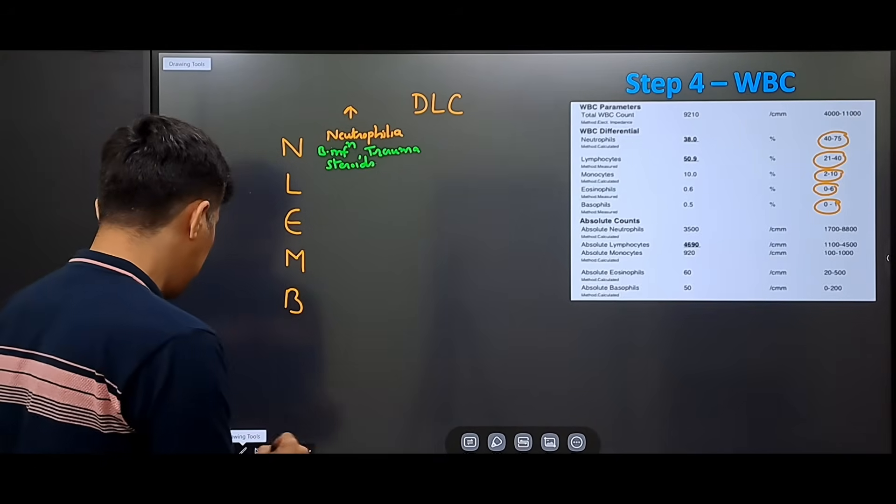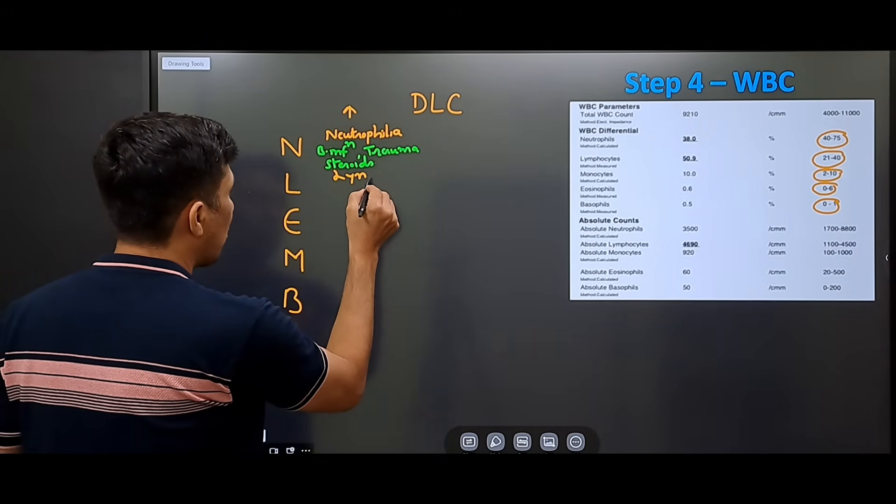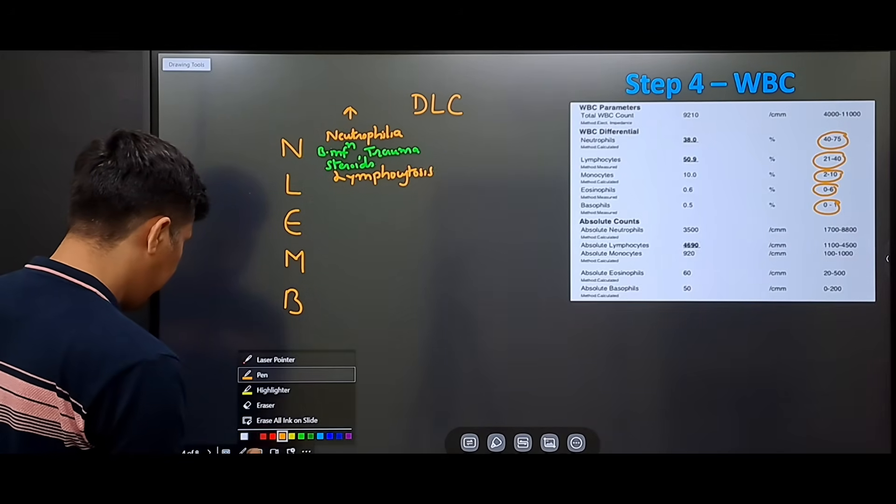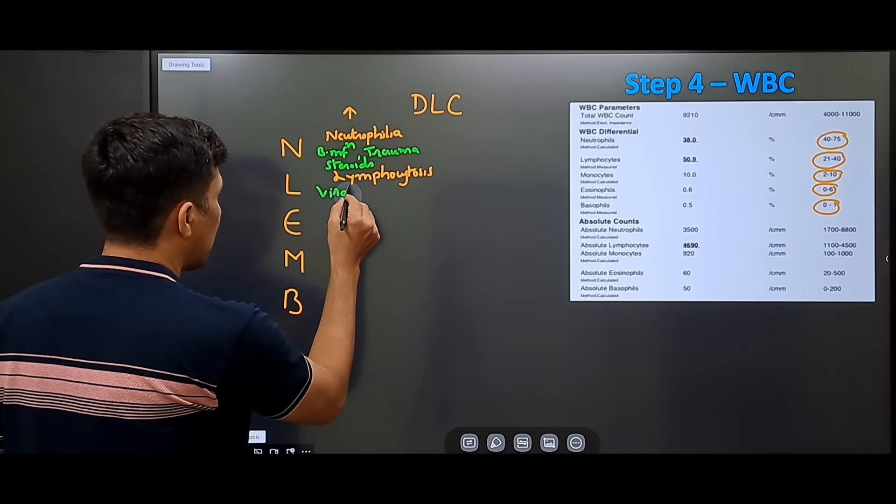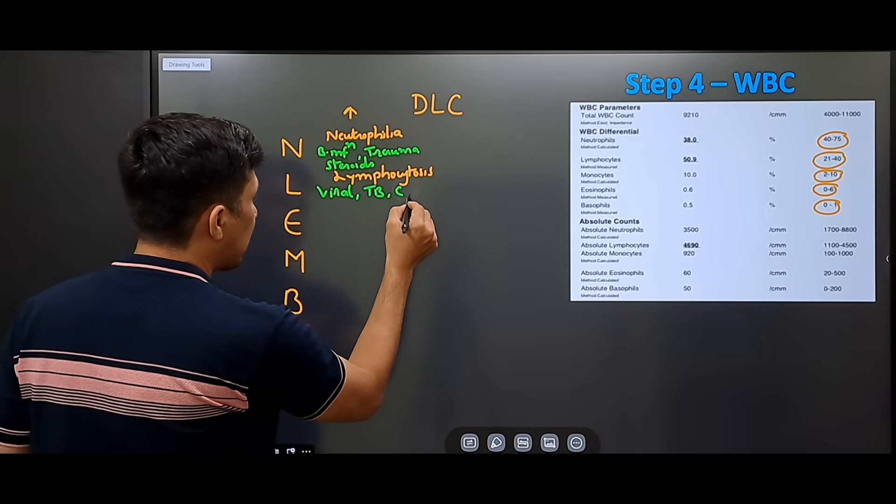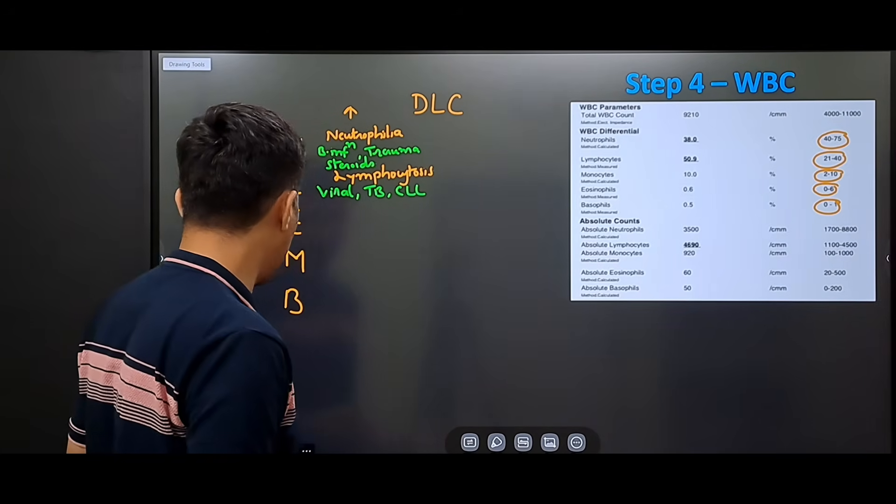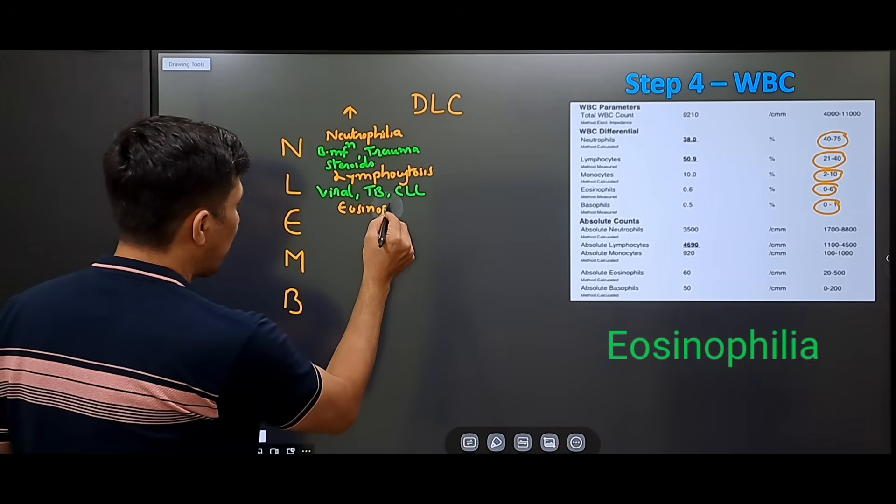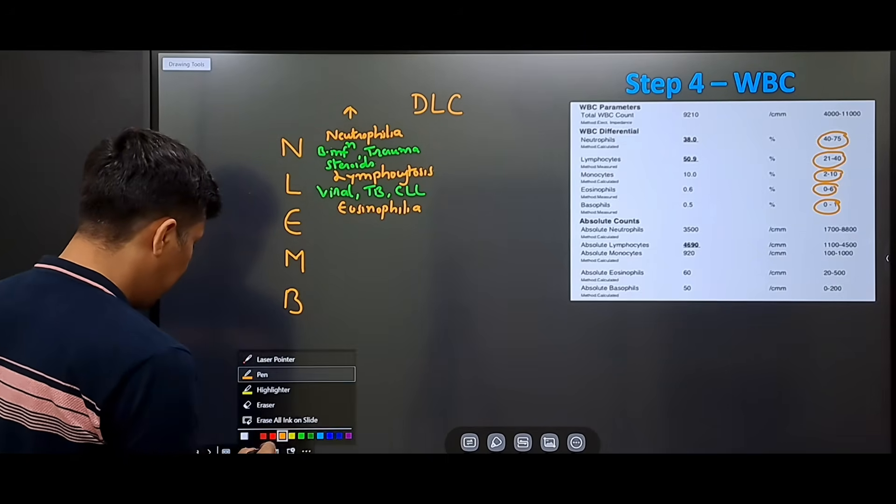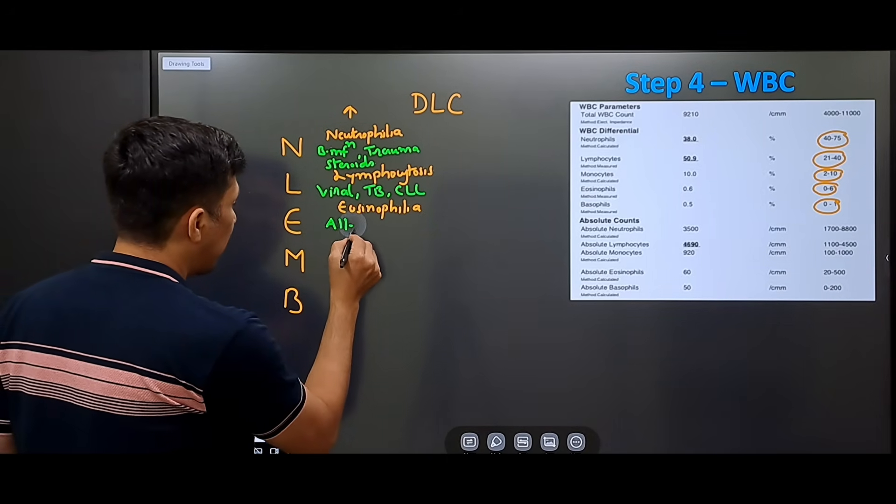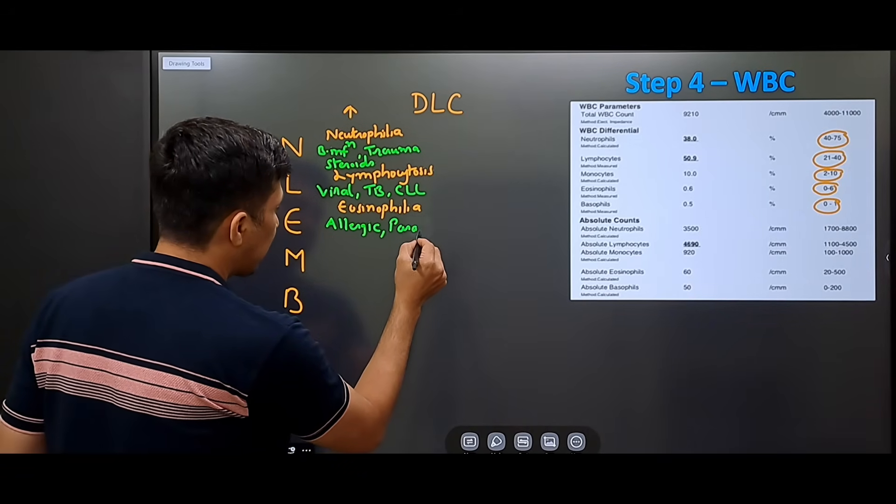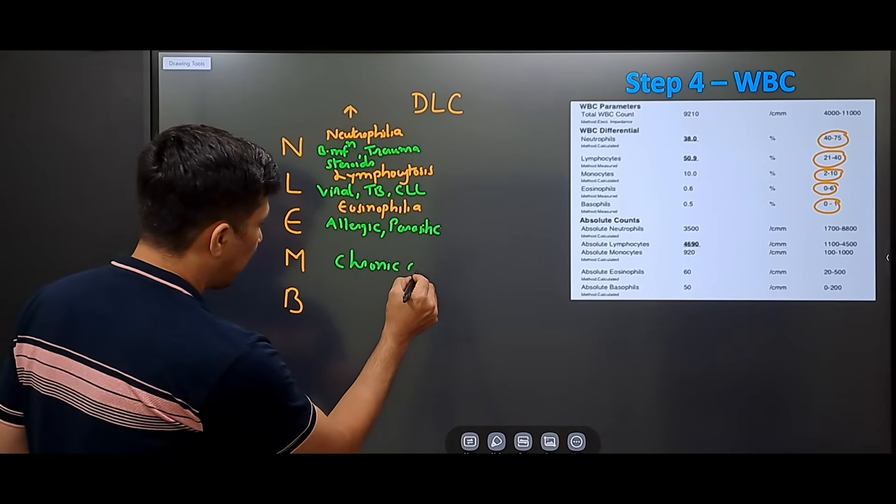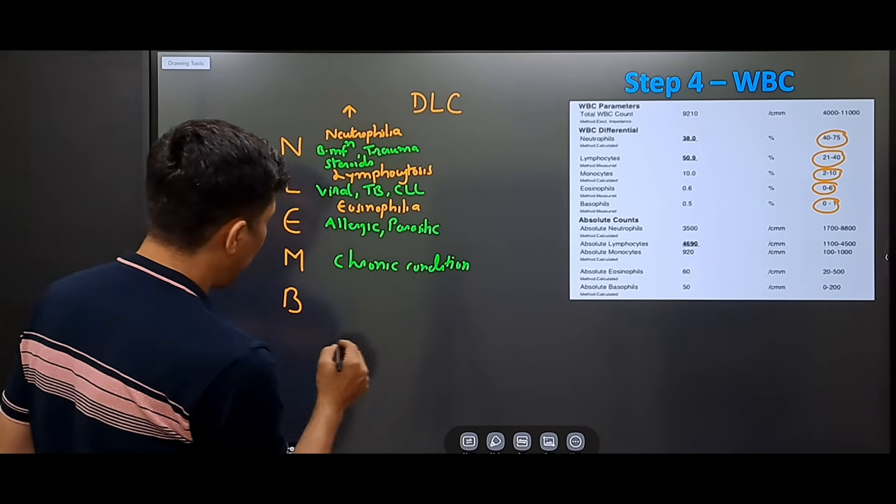When the lymphocytes are increased, it is called as lymphocytosis. We see lymphocytosis during viral infections, also in tuberculosis and CLL. When the eosinophils are increased, it is called as eosinophilia. We see this eosinophilia when there are certain allergic conditions and parasitic infections. When monocytes are increased, monocytes are increased in chronic conditions. And the rise of basophils is very rare.